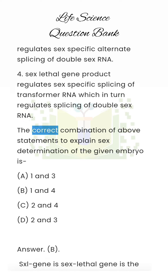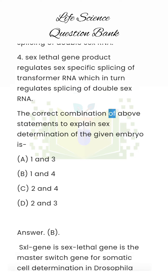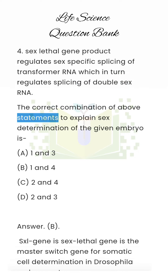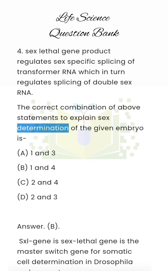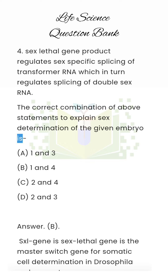The correct combination of above statements to explain sex determination of the given embryo is: A. 1 and 3, B. 1 and 4, C. 2 and 4, D. 2 and 3.